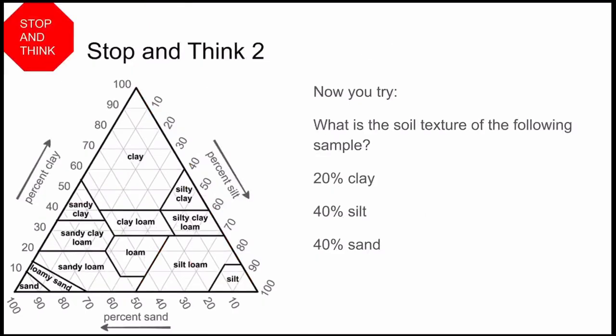To help you practice with this, here is a stop and think question. Try figuring out what the category of soil texture this sample would be if you have 20% clay, 40% silt, and 40% sand.